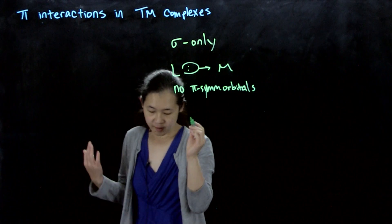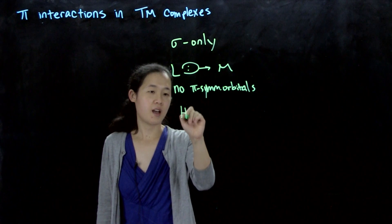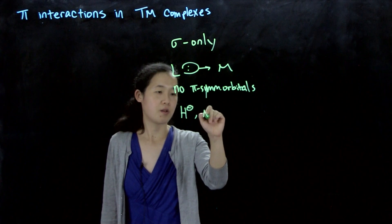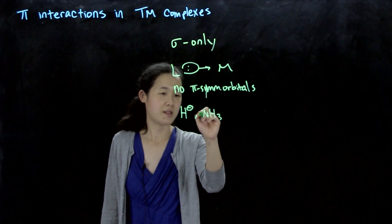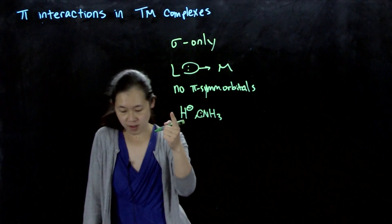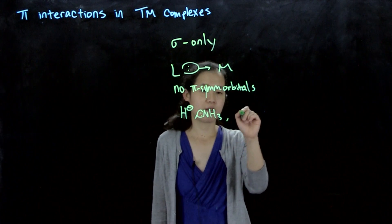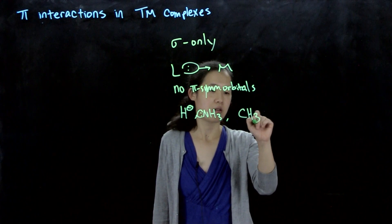For example, sigma-only ligands could be a hydride, ammonia. Ammonia has a lone pair. Hydride also has a lone pair because you have an extra electron. Or let's say a methyl.